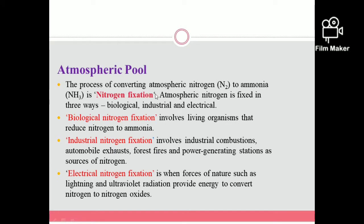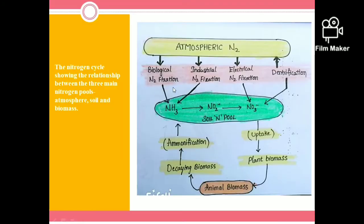The process of converting atmospheric nitrogen to ammonia is called nitrogen fixation. Atmospheric nitrogen fixation occurs in three ways: biological, industrial, and electrical nitrogen fixation. If you see in the figure, these are the three ways in which atmospheric nitrogen is converted to ammonia.